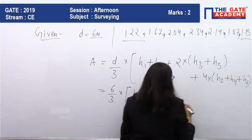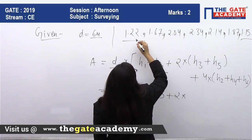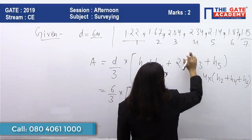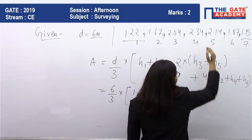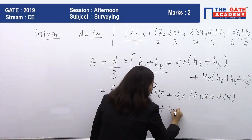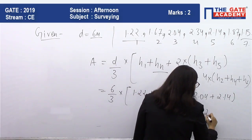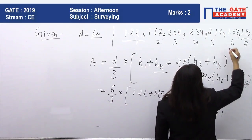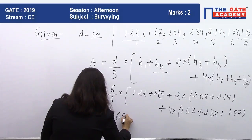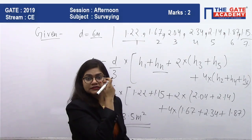We have seven offsets, numbered 1 through 7. The odd-positioned offsets (positions 3 and 5) are 2.04 and 2.14. The even-positioned offsets (positions 2, 4, and 6) are 1.67, 2.34, and 1.87. Applying the formula: A = 2 × [1.22 + 1.15 + 2×(2.04 + 2.14) + 4×(1.67 + 2.34 + 1.87)] = 68.5 m².